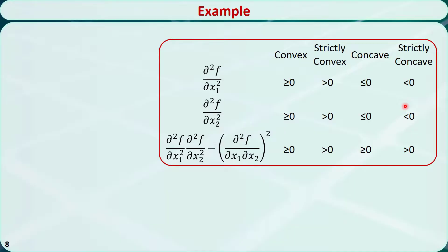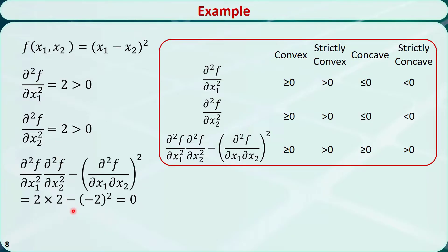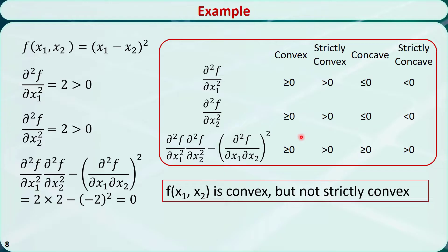With this table in mind, let's check this example — a two-variable function. The second-order partial derivative with respect to x1 only is 2. The second-order partial derivative with respect to x2 only is 2. The product minus the second-order partial derivative with respect to x1 and x2 is 0. Because the last one is 0, the function cannot be strictly convex or strictly concave. Also, because the first two items, 2 and 2, are not less than or equal to 0, it cannot be concave. We can conclude that f is convex, but not strictly convex.